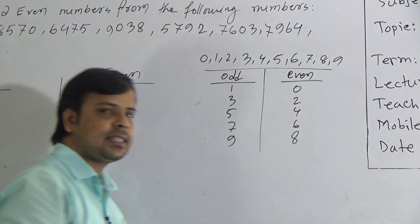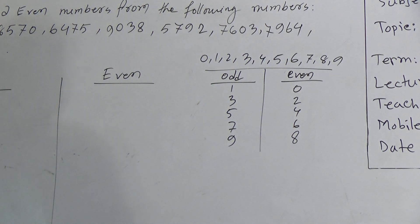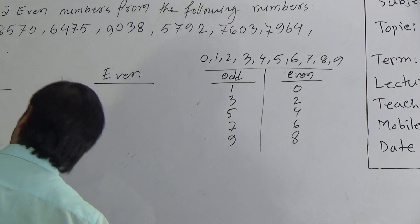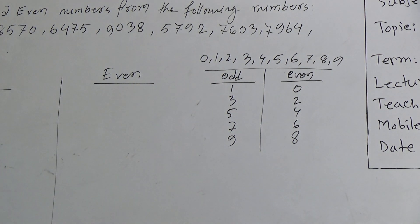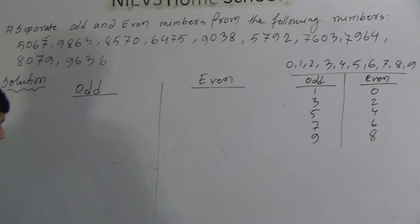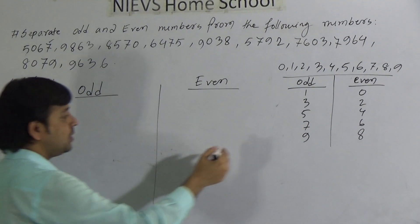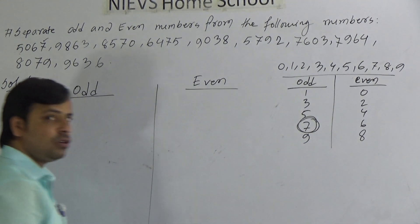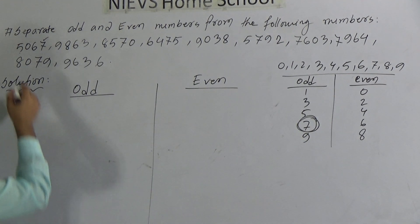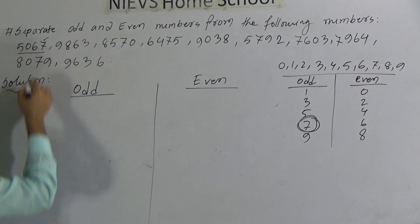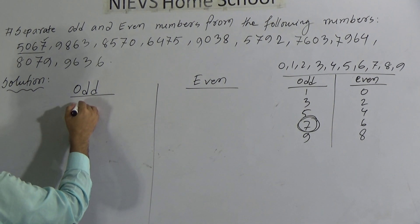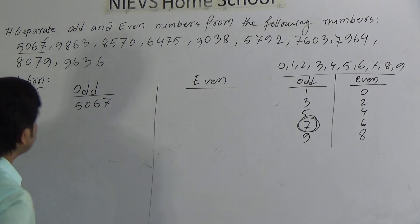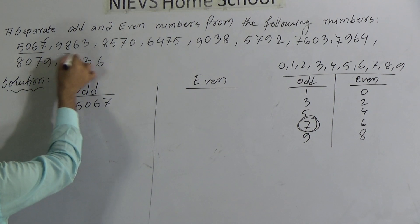So now we can separate the numbers into odd and even. Look at the first number: 5067. Here the unit place is 7. Now see — 7 is in odd. So we can say 5067 is an odd number and we write 5067 under odd.